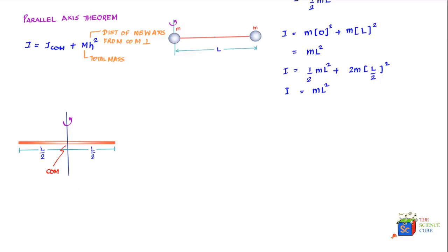We take an infinitesimally small piece of the rod of length dx and mass dm, located at a distance x from the axis of rotation. The moment of inertia due to this small element is dI = dm·x². To find the total moment of inertia, we integrate both sides — but first we need to express dm in terms of dx.